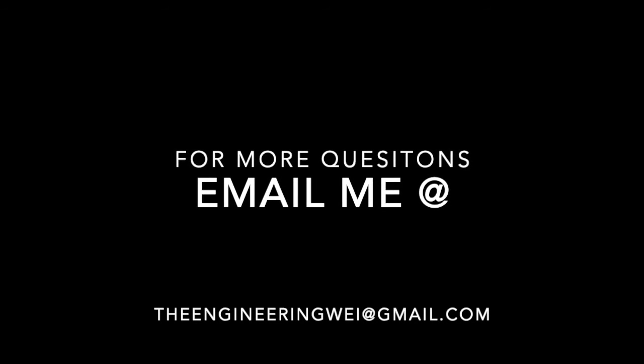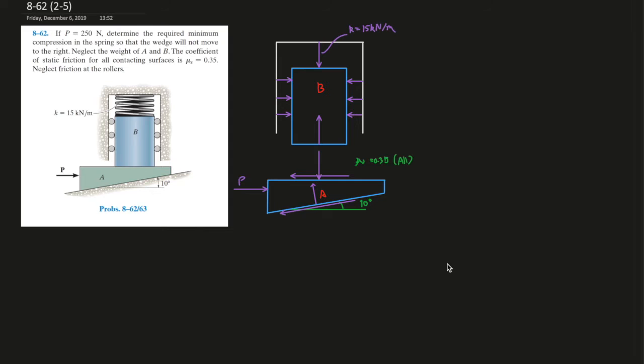I can assist you or tutor you more. If you have more questions, just email me. For question 62, this is a widgets problem. If P equals 250 newtons, determine the required minimum compression in the spring so that the widgets would not move to the right. Neglect the weight of A and B. The coefficient of static friction of all contacting surfaces is mu equals 0.35. Neglect friction at the rollers.